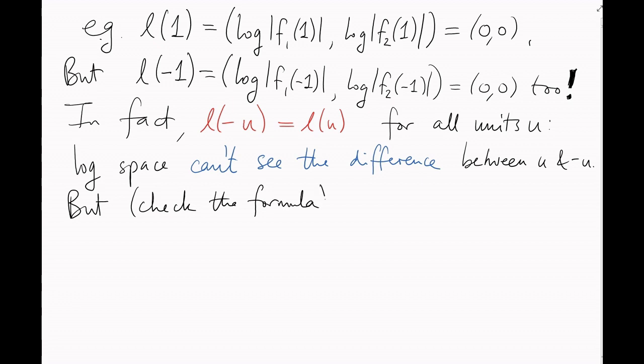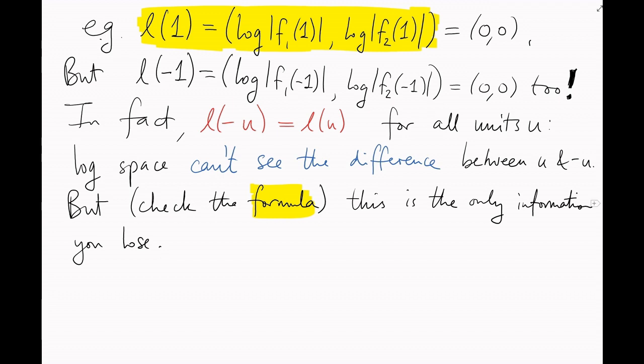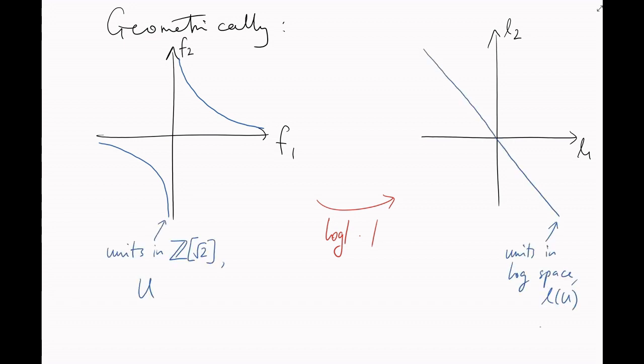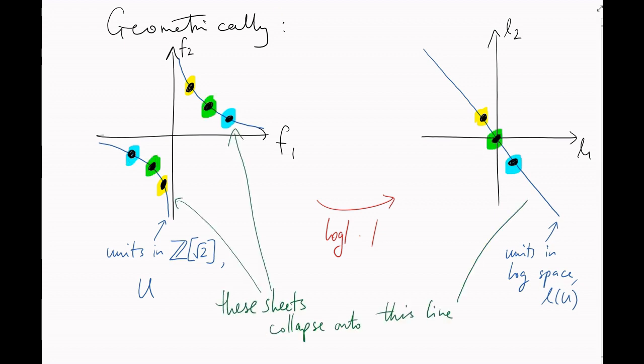Logarithm space can't tell the difference between u and minus u. But you can check from the formula for L and see that this is the only information you lose. Minus signs disappear. So, geometrically, when we applied L, we collapsed both sheets of this hyperbola onto the same line. And now that we want to go back, we're going to have to separate them out again.